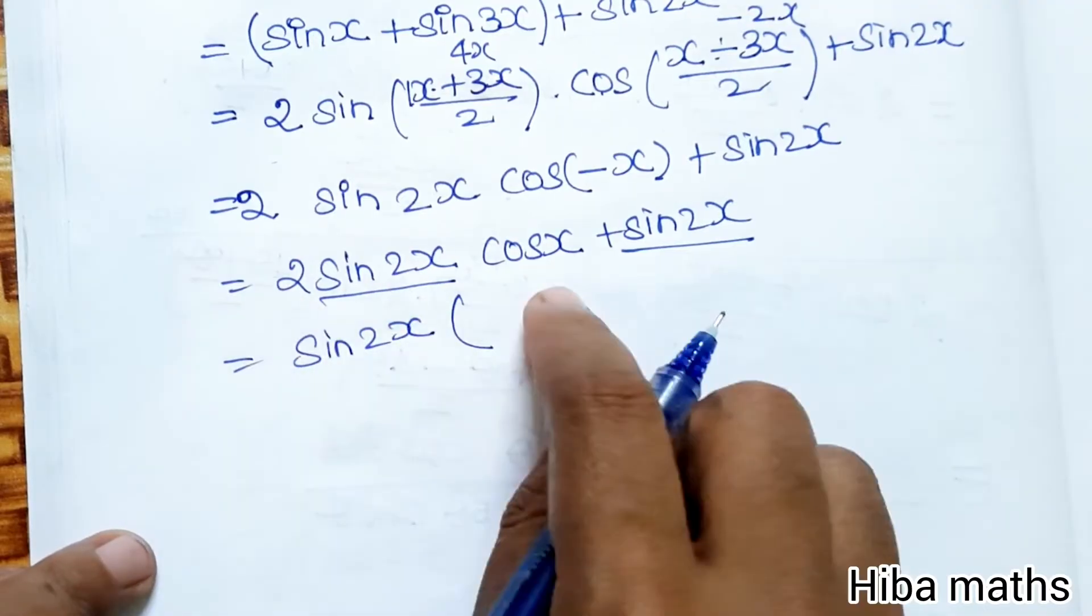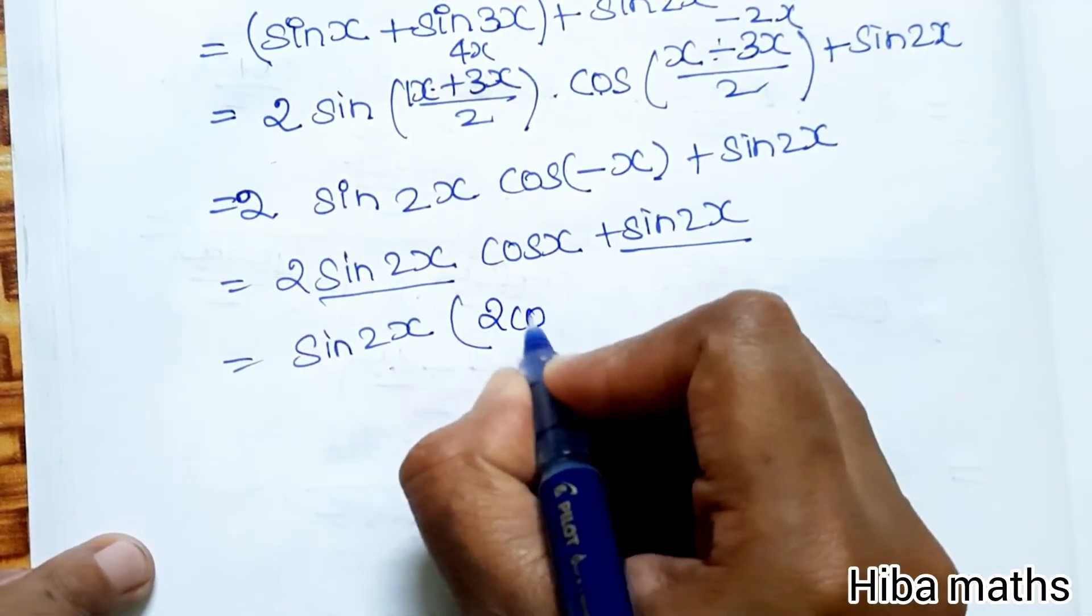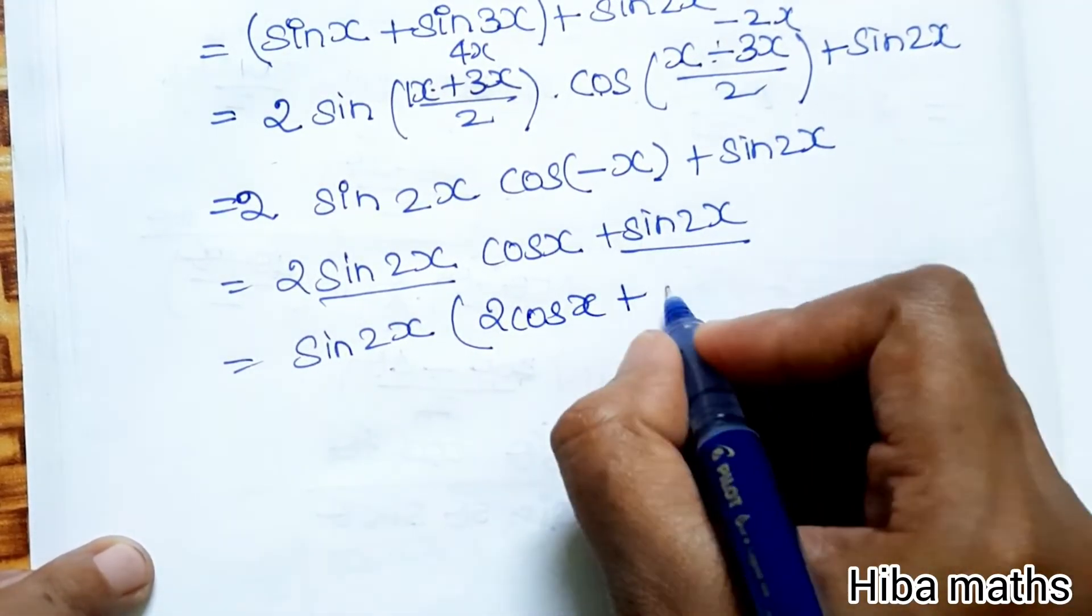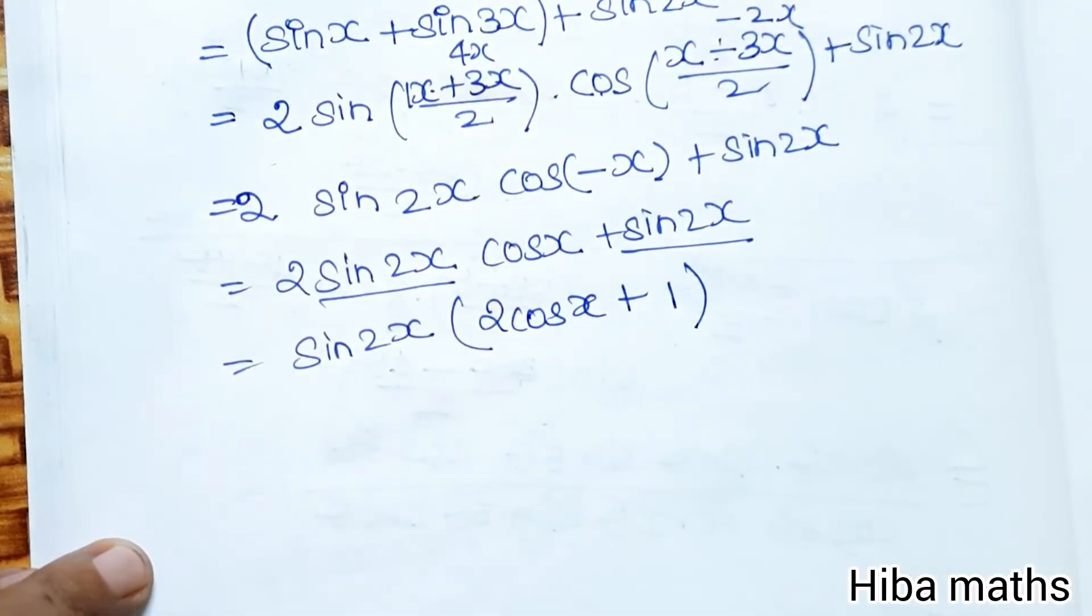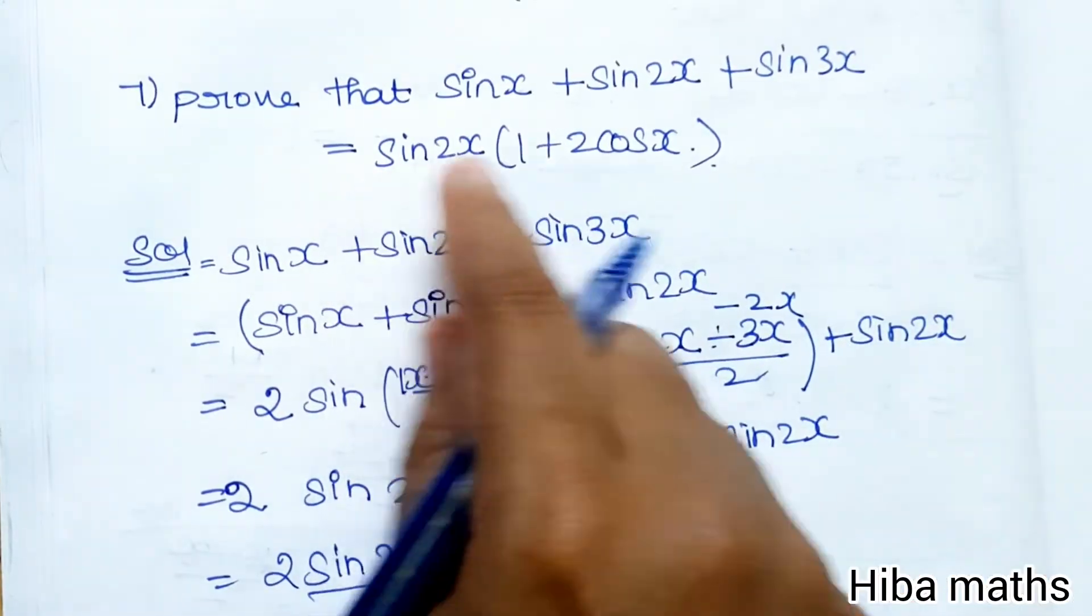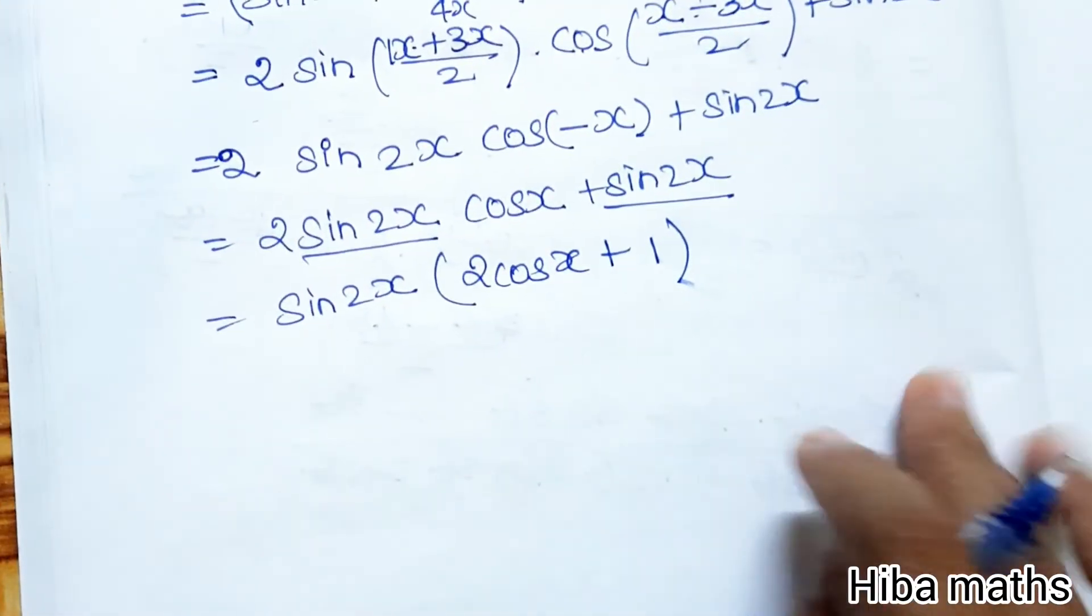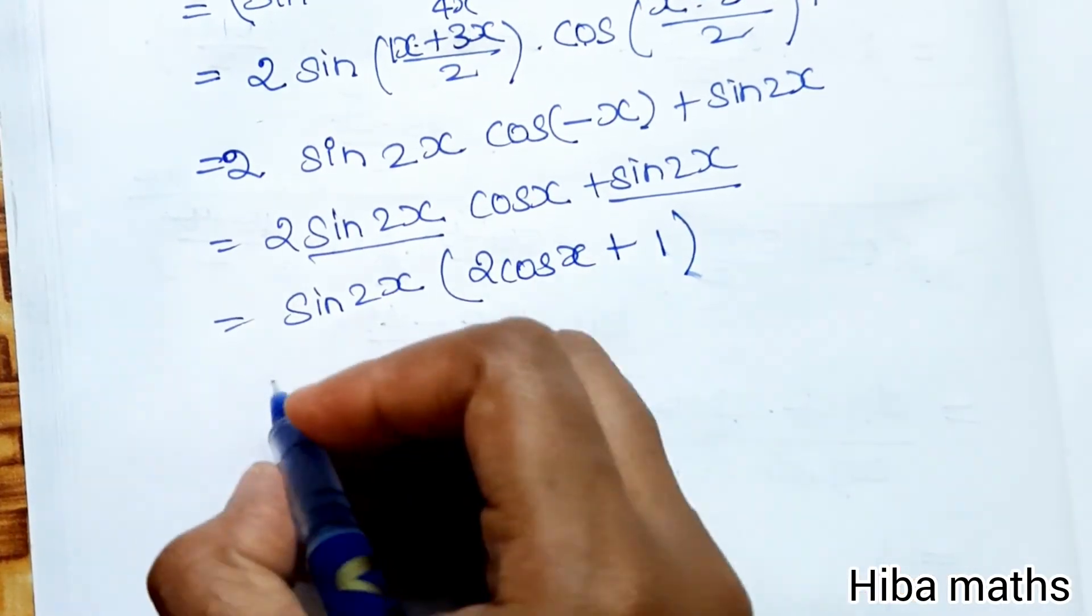sin 2x times 2 cos x, plus 1. Taking sin 2x common: sin 2x (2 cos x + 1) = sin 2x (1 + 2 cos x). This matches the RHS.